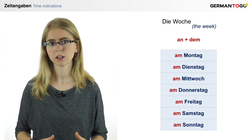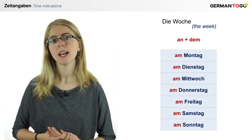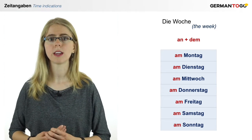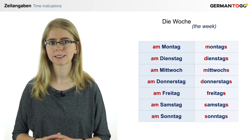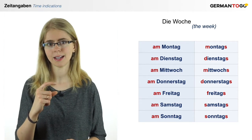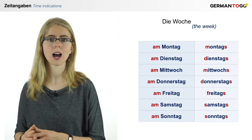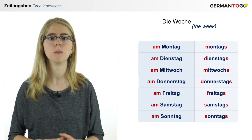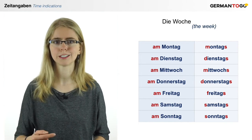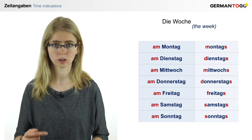You can use am + day if you talk about things that happen once or not very often. If you talk about things that happen every week, then you say Montags — the day of the week with a small letter and an S at the end. So Montags means 'on Mondays.' Montags, Dienstags, Mittwochs, Donnerstags, Freitags, Samstags, and Sonntags.